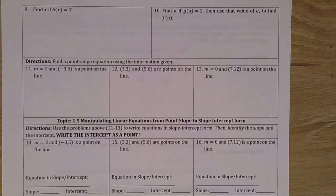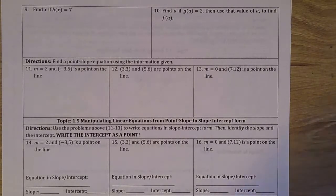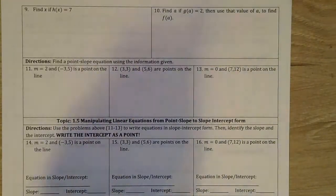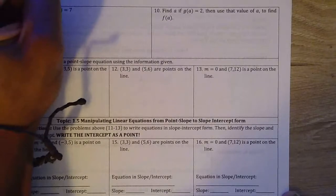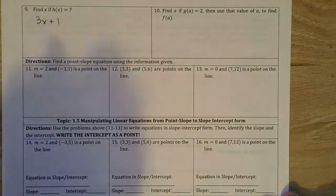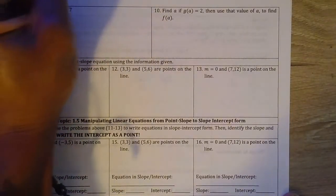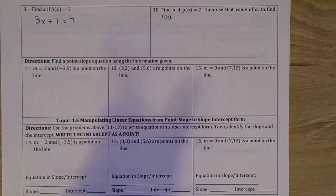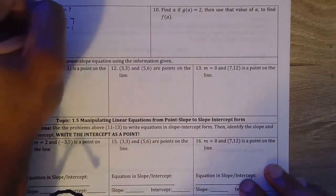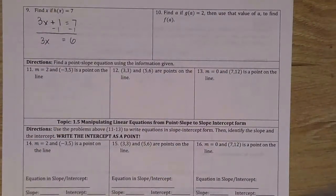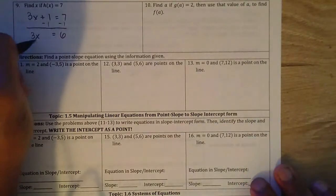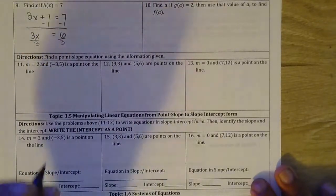Question number 9: find x if h(x) is equal to 7. This isn't asking us to input 7 — rather, the whole function h(x) equals 7. We know h(x) is 3x plus 1, so we set 3x plus 1 equal to 7. Subtracting 1 from both sides gives 3x equal to 6. Dividing both sides by 3, we get x is equal to 2.